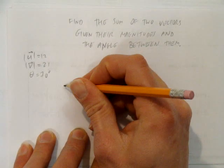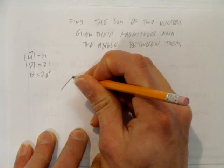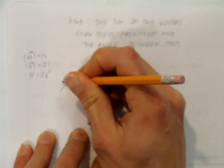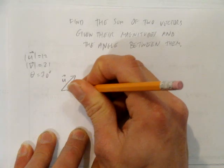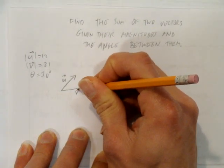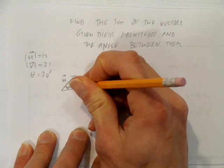The first thing we're going to do is draw a diagram. It doesn't really matter how you draw it. Let's say that vector u looks like this, and vector v looks like this, and the angle between them is 70 degrees.